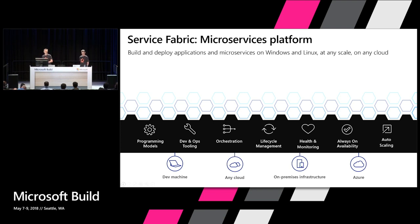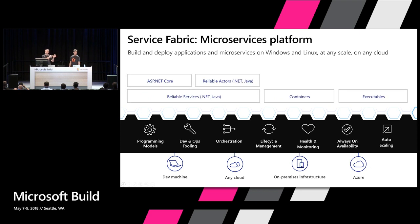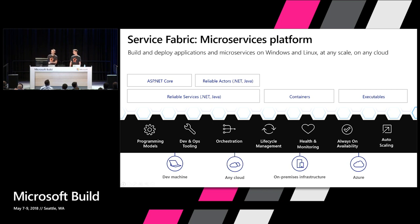Service Fabric is a platform designed from the ground up as a microservices platform where you can build scalable distributed systems composed of small pieces of code. It covers everything from the developer side — rich programming frameworks, reliable services, the ability to run executables and containers — through to the ops side: rollouts, lifecycle management, health, and scaling the underlying cluster.